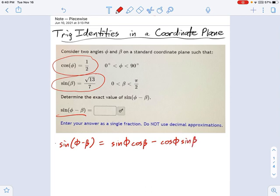Well, what's missing here? We don't know sine of phi. We don't know cosine of beta. So we need to find those things out. Sine of phi and cosine of beta.